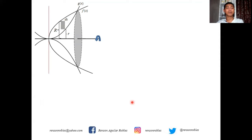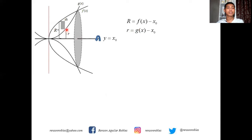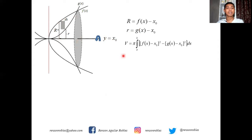If the axis of revolution is not the x-axis but the line y = x₀ for any number x₀, then small r = g(x) − x₀ and capital R = f(x) − x₀. The volume is: V = π ∫[A to B] [(f(x) − x₀)² − (g(x) − x₀)²] dx.